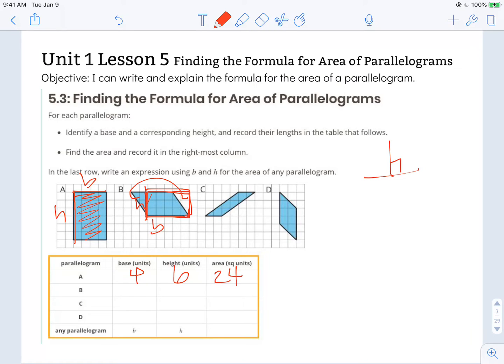And the base is 1, 2, 3, 4, 5 units. And the height is 3 units. So then the total number of squares, even though it's been shifted as a parallelogram, would still be 15 squares. There'd be 15 squares inside of that shape.